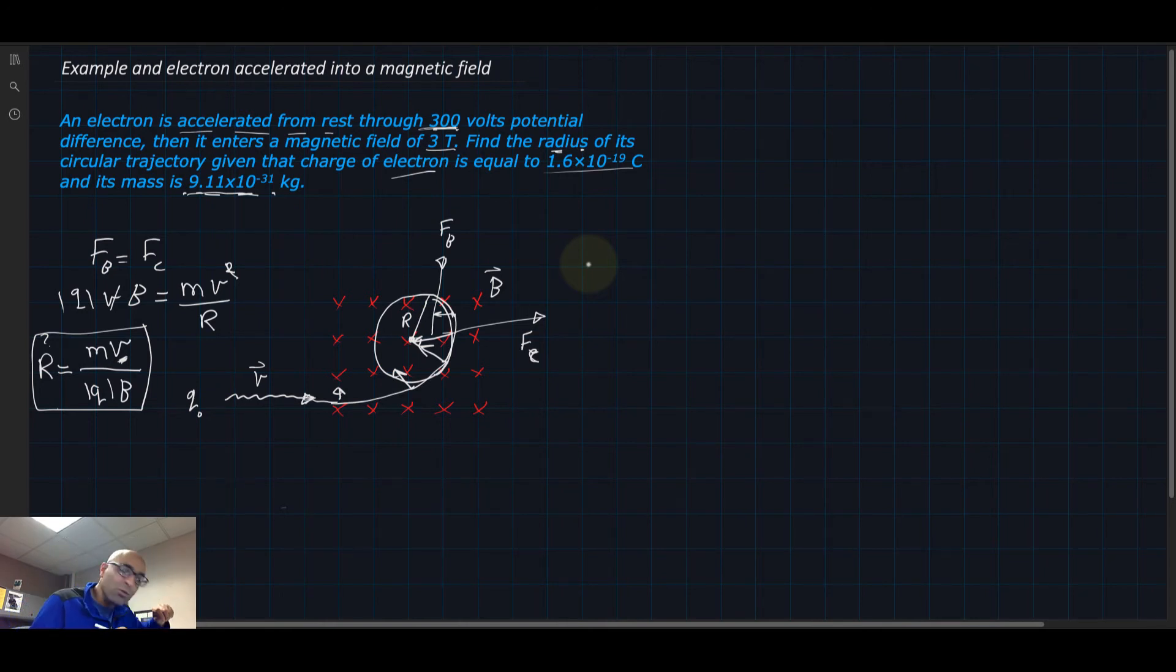It then moves because of the potential difference. The potential difference gives the charge—which is an electron in our case—a big push to end up with a certain kinetic energy.